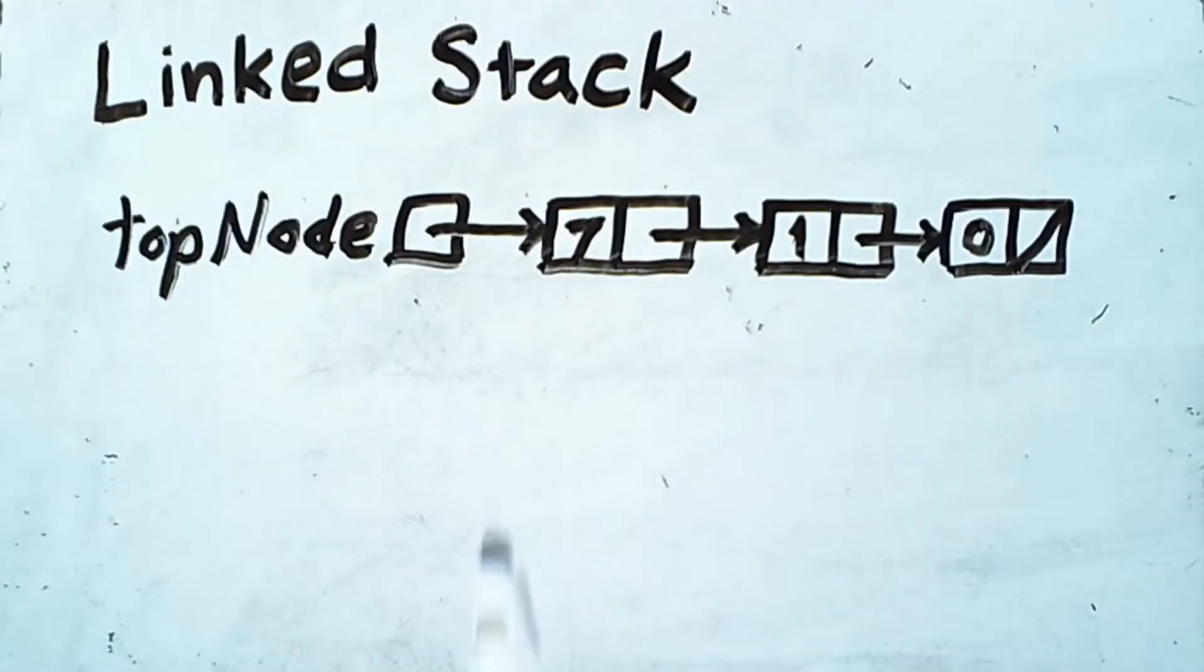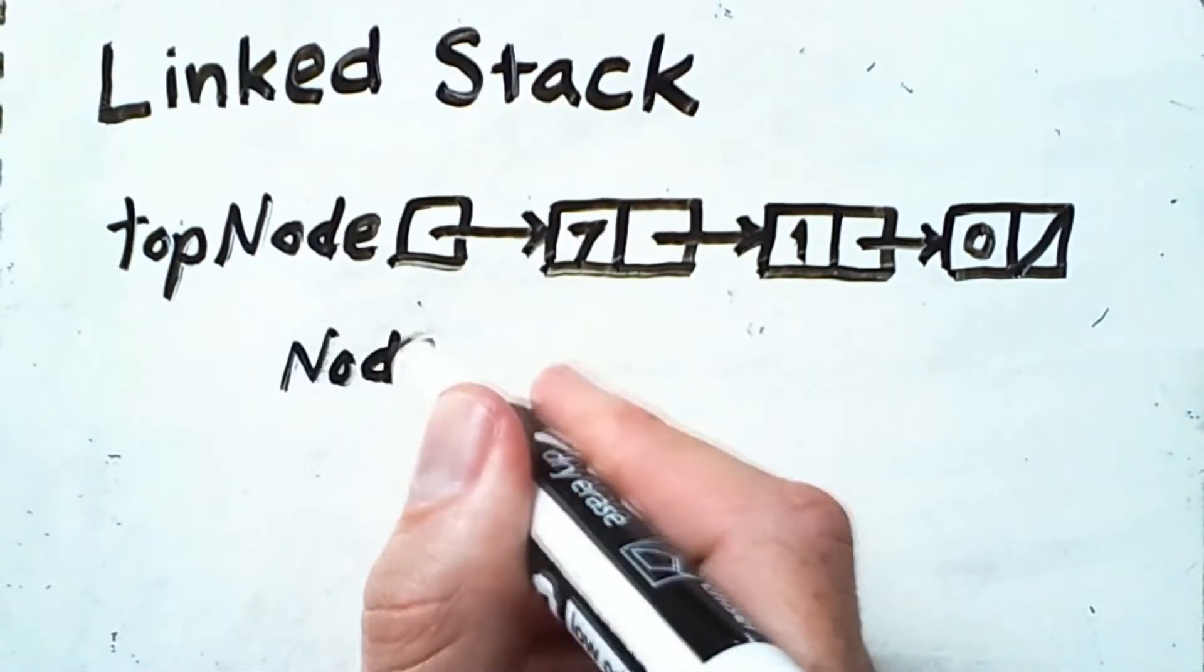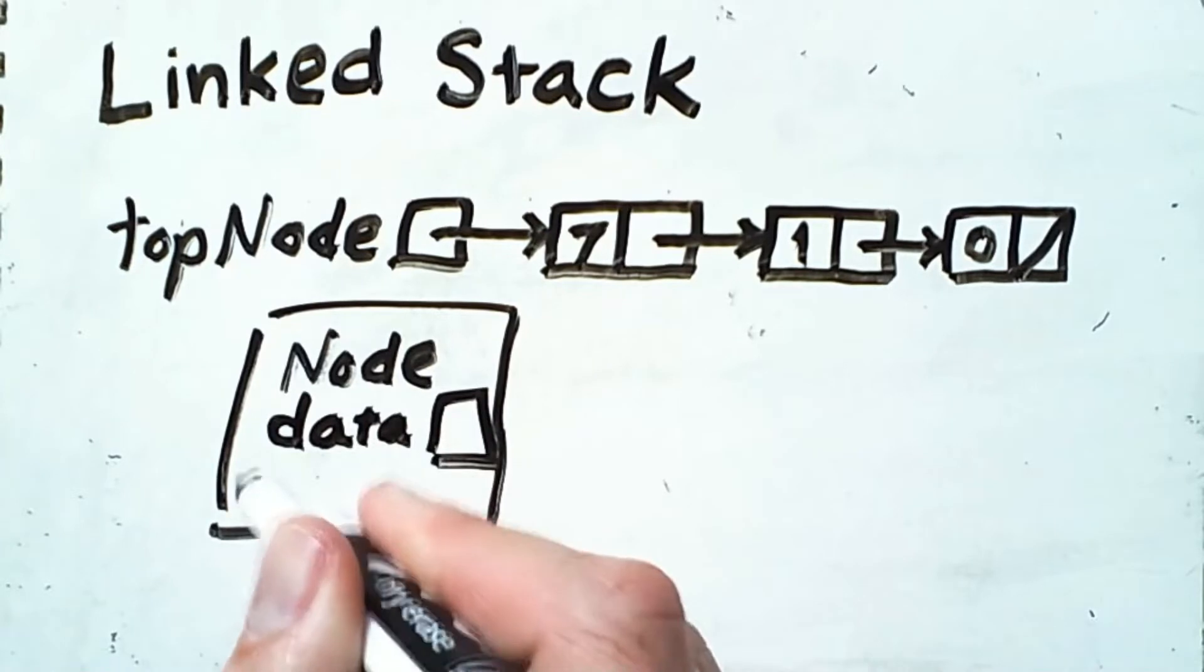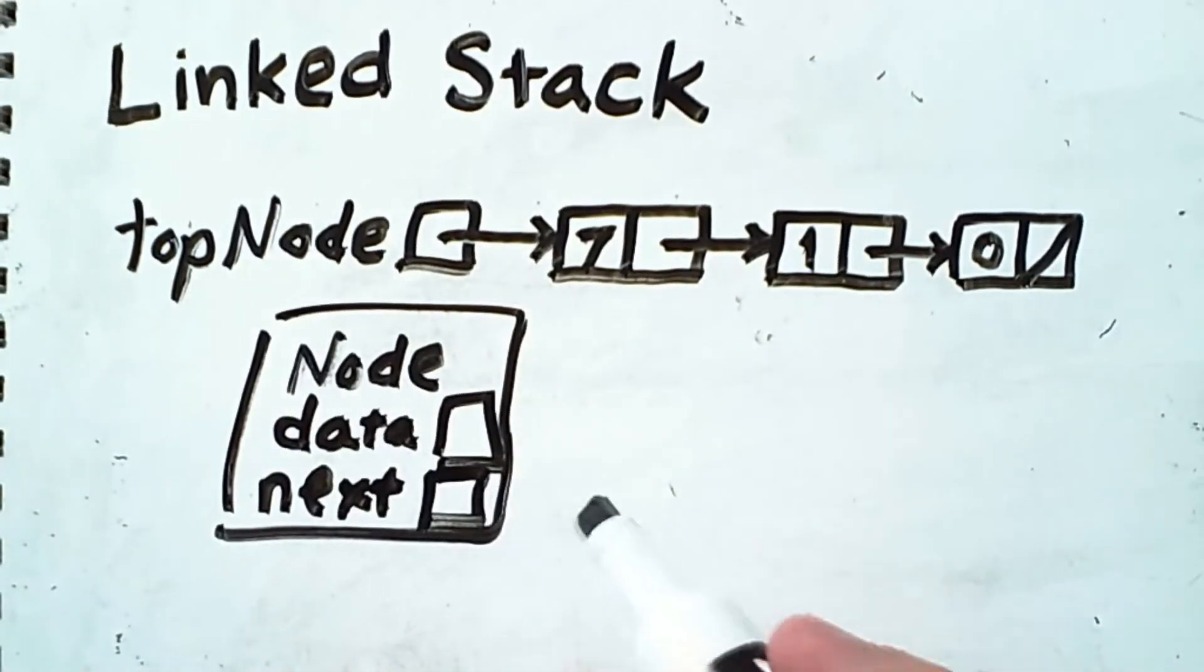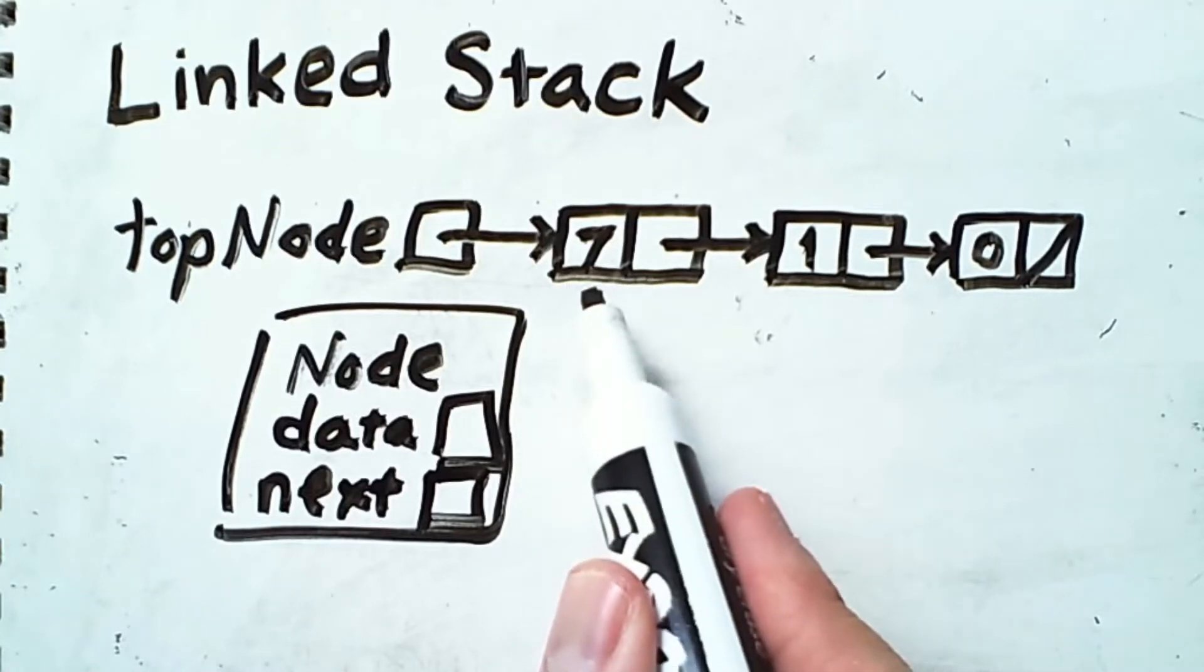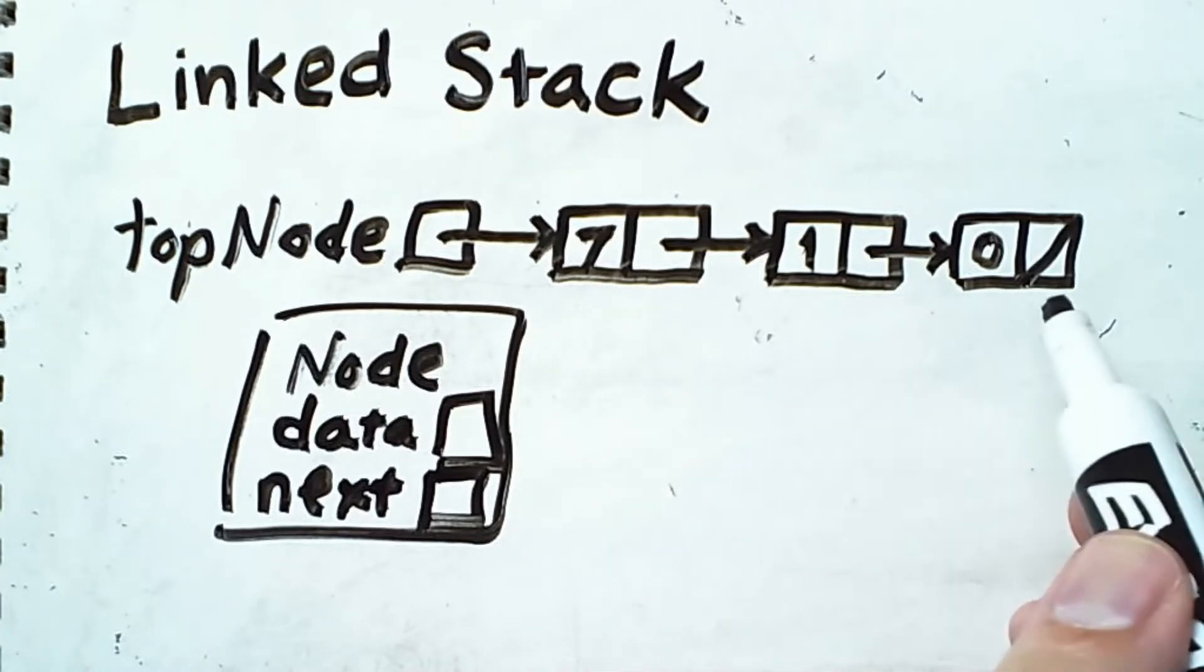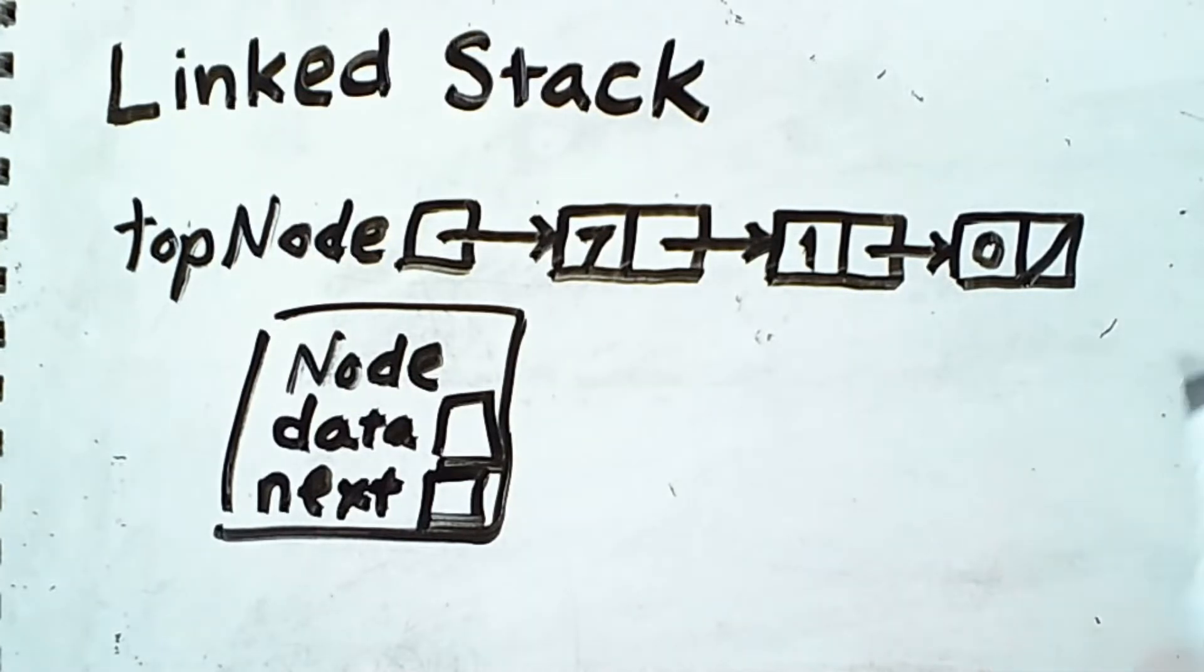The linked stack is made up of several nodes. A node is a simple data structure consisting of two variables: data and a reference to a next node. This is drawn in simple form here where we simply assume the first box is the data and the second box is the link to the following node. Note that sometimes that next link will be null, in which case we put a slash through that box.